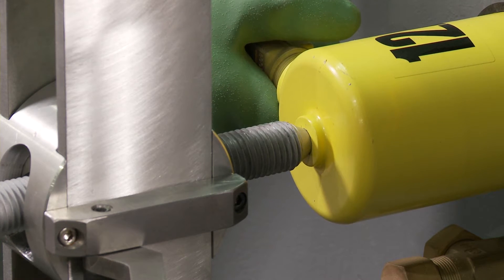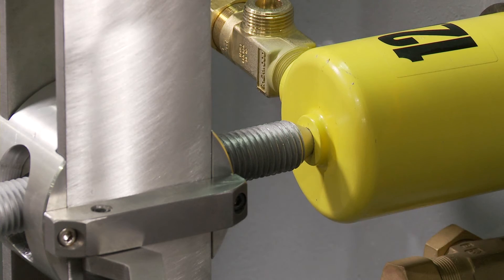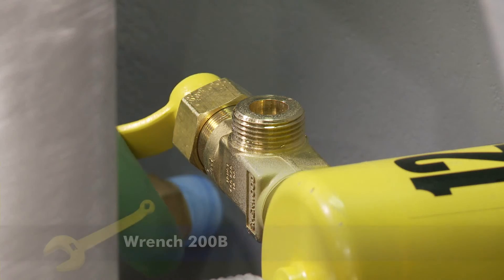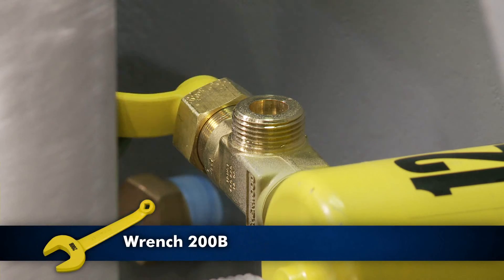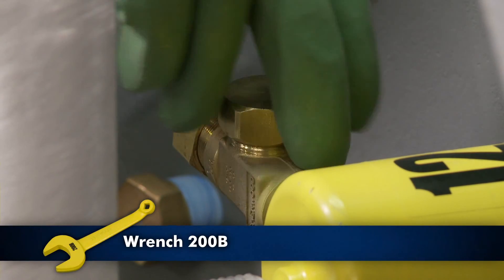Hand tighten the screw 28D forcing the hood 12A and gasket against the head of the container. Close vent valve 12V on the hood using wrench 200B. Replace the vent valve outlet cap.